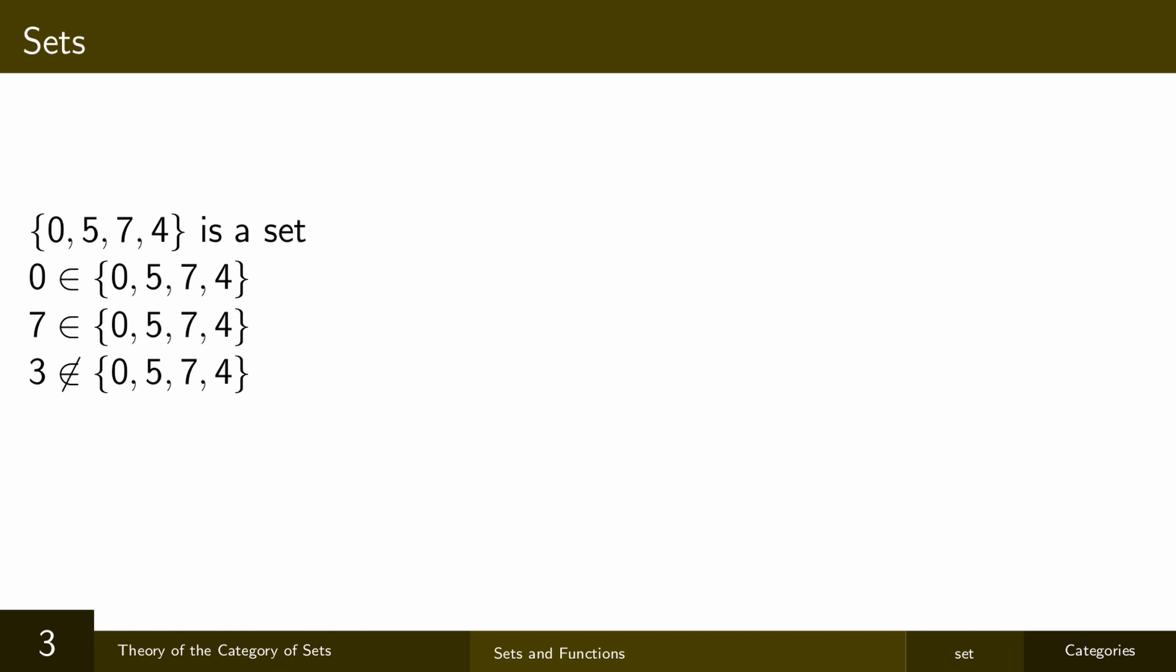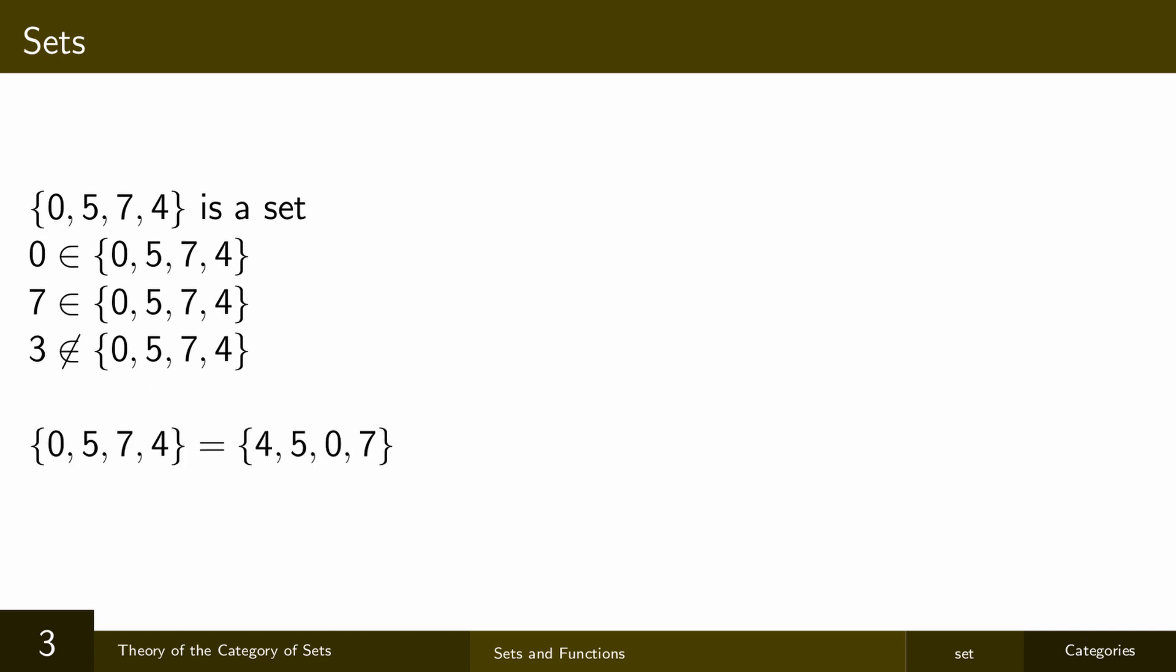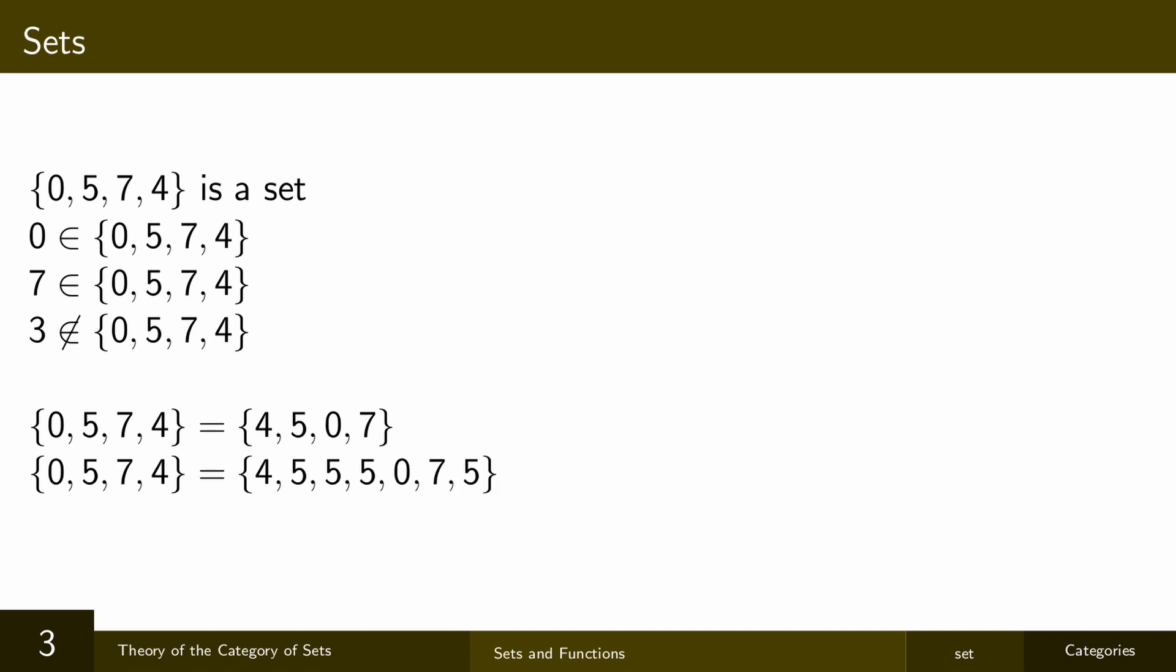So an important principle in set theory is that sets are only defined by what's in them. So in particular, when I write out a set like this, and I list the elements in some order, the order doesn't matter. For instance, the set {0, 5, 7, 4} is exactly the same set as {4, 5, 0, 7}. And also everything is either an element of the set or not. There's no notion of being a double element or something like that. So if I list out the same thing a bunch of different times, that's still the same set.